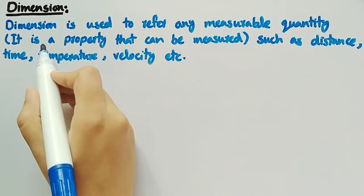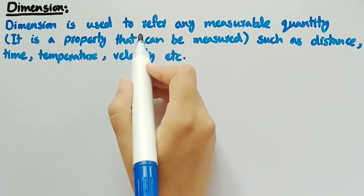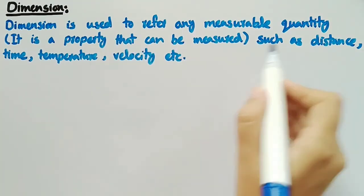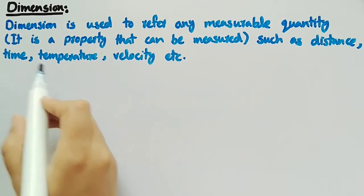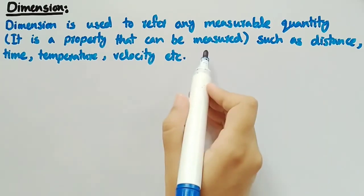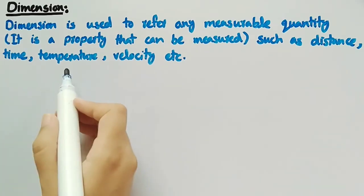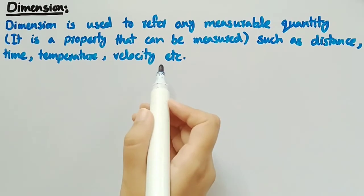In this video, we will discuss what is dimension and what are primary and secondary dimensions. Dimension is used to refer to any measurable quantity. That is, it is a property that can be measured such as distance, time, temperature, and velocity, etc.